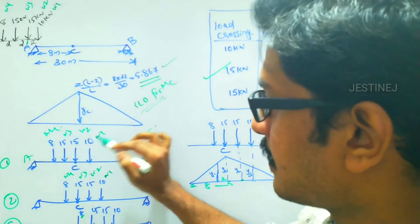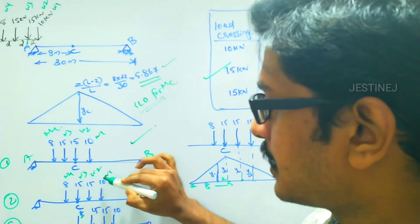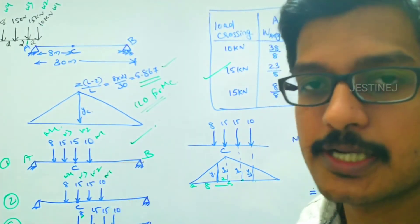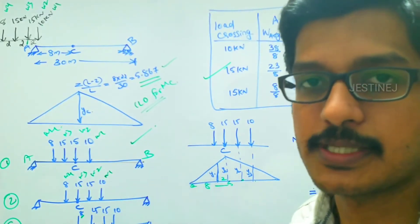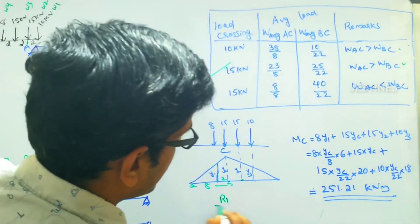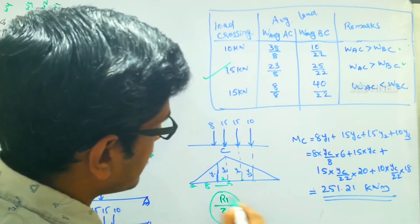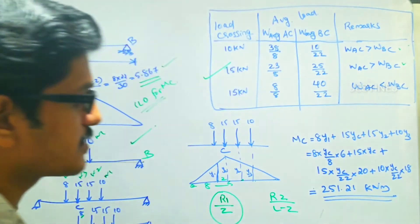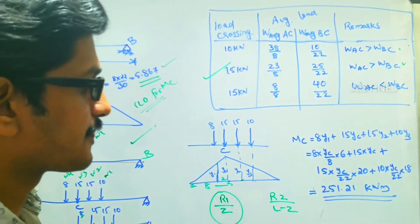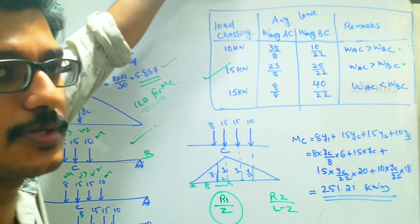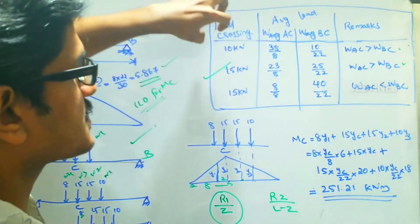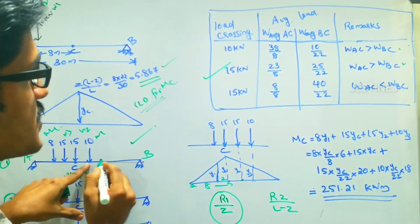Let the loads be W1, W2, W3, and W4. The three conditions to analyze are: first, W2 (15 kN) acting at point C with W1 (10 kN) having crossed; second, W3 acting at point C with both W2 and W1 having crossed; third, W4 acting at point C with the rest of the loads crossed over. We use the condition R1/z = R2/(l−z), where R1 is all loads to the left of section C and R2 is all loads to the right.